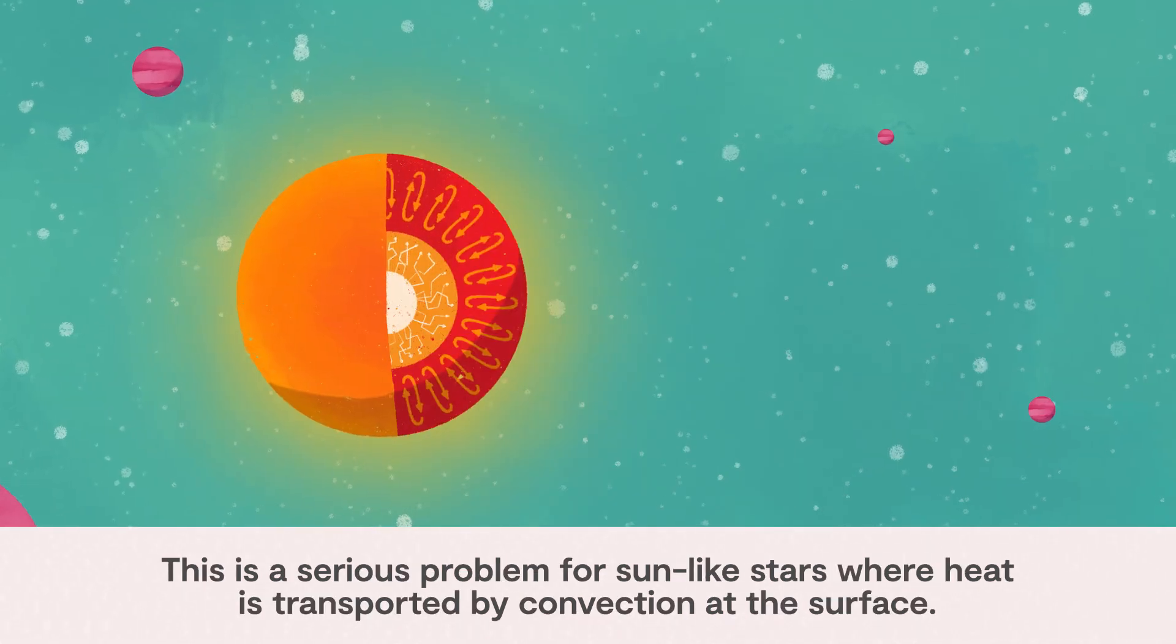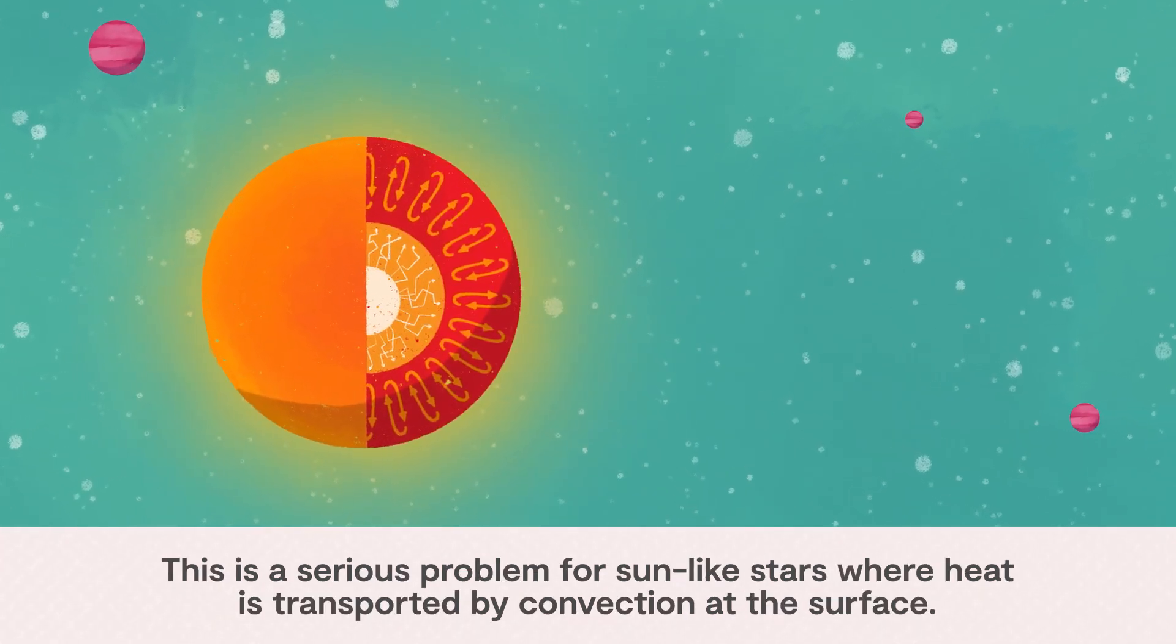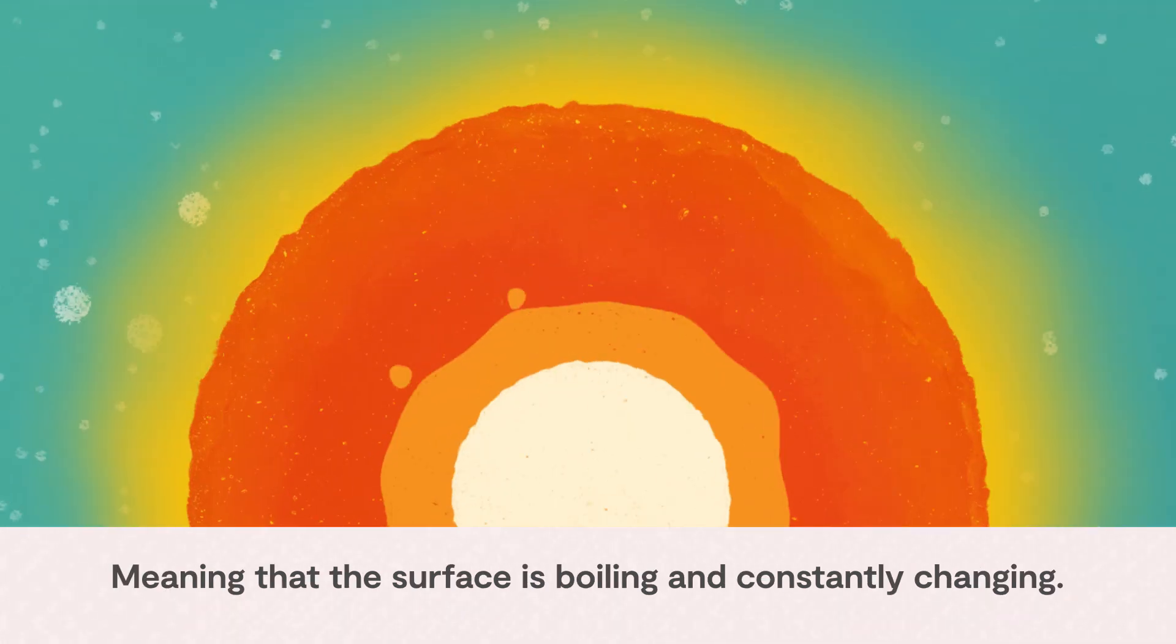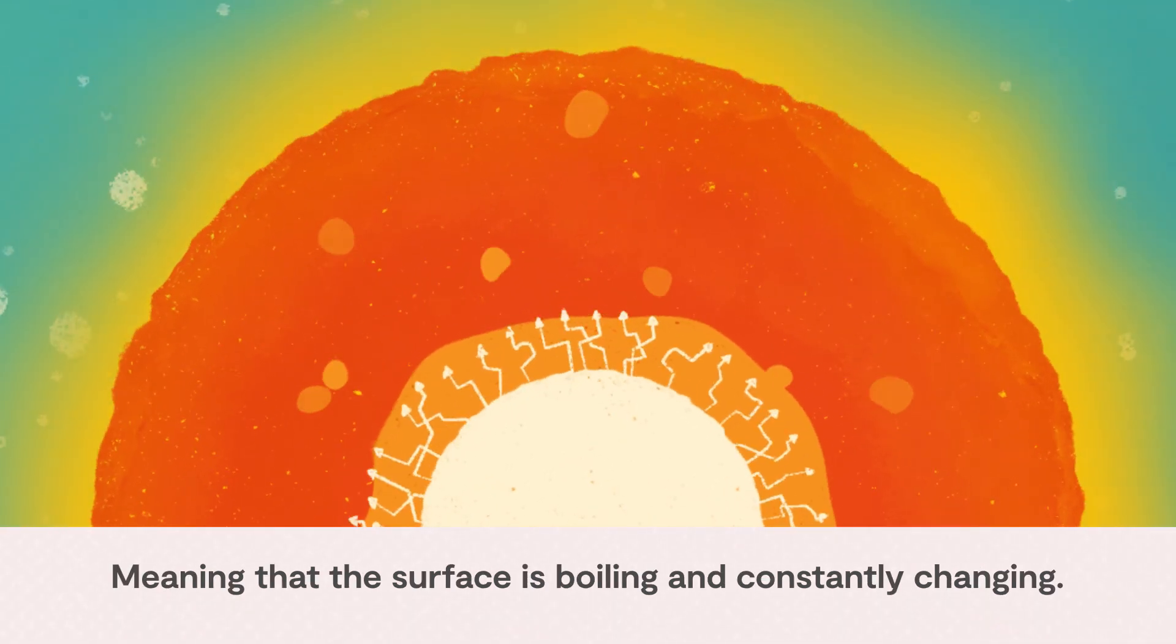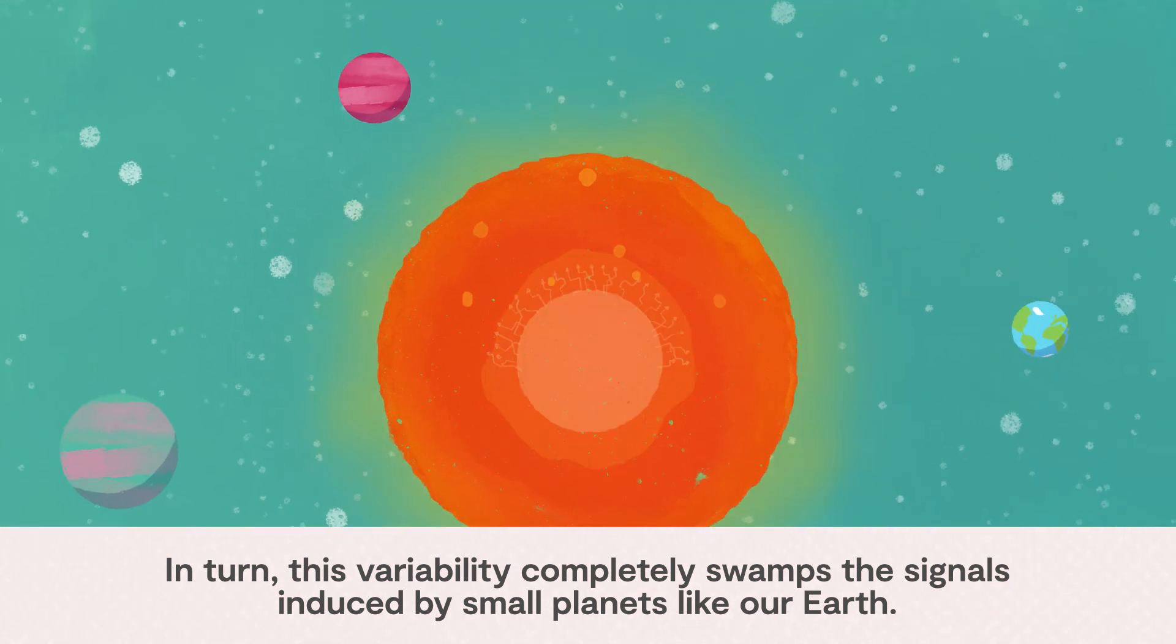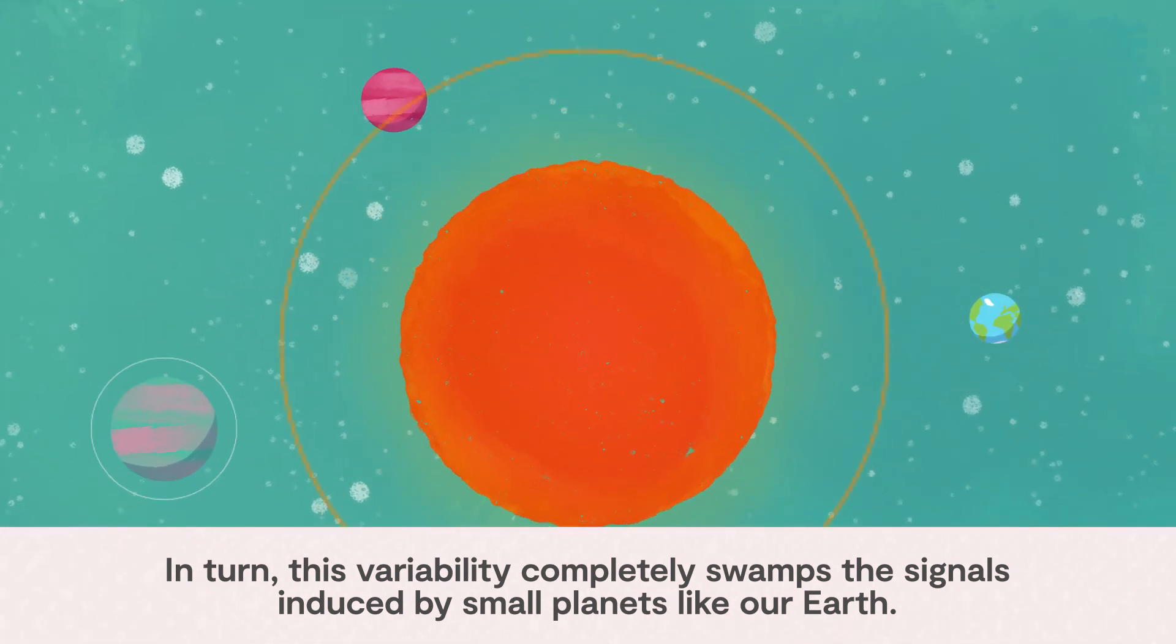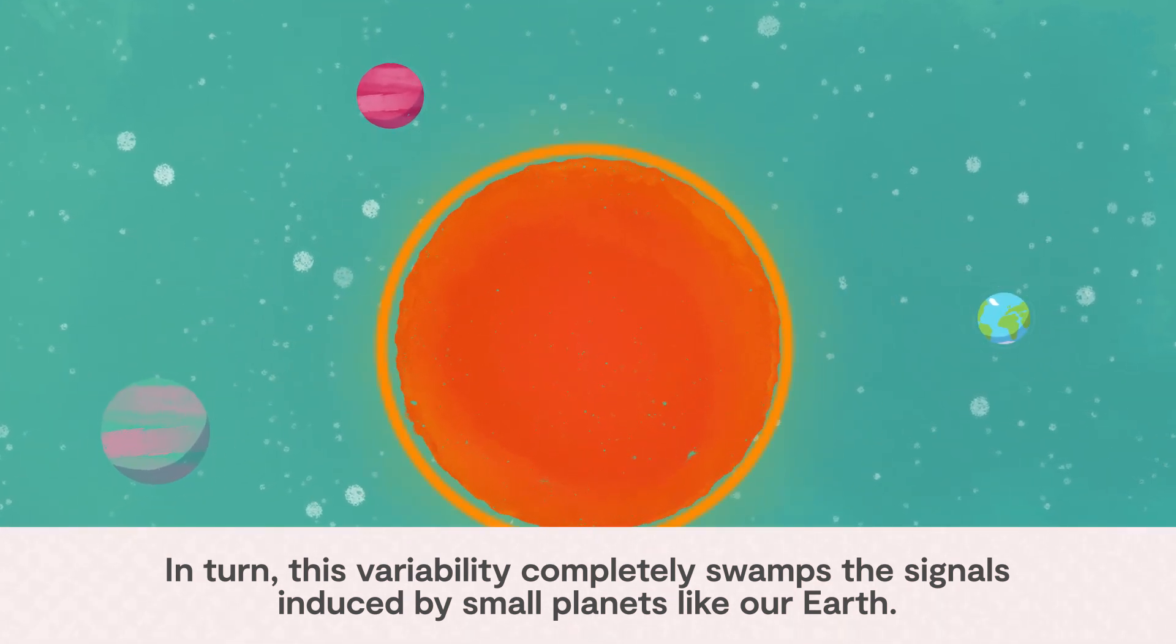This is a serious problem for sun-like stars where heat is transported by convection at the surface, meaning the surface is boiling and constantly changing. In turn, this variability completely swamps the signals induced by small planets like our Earth.